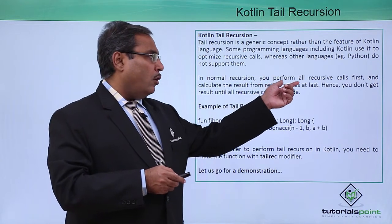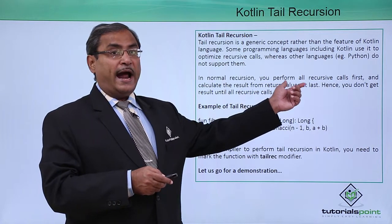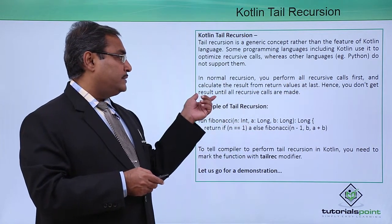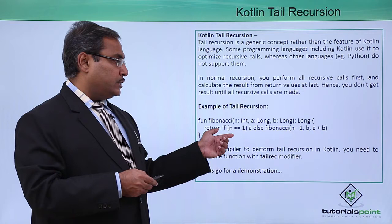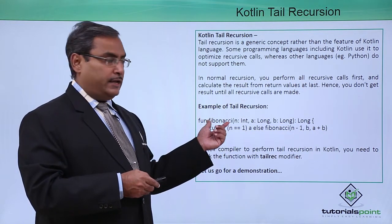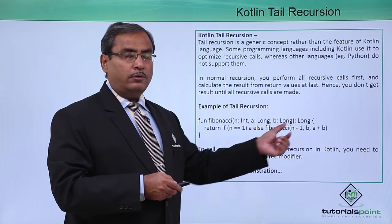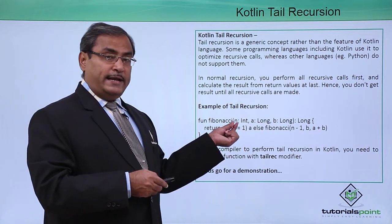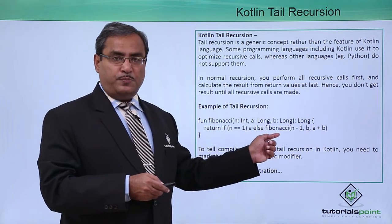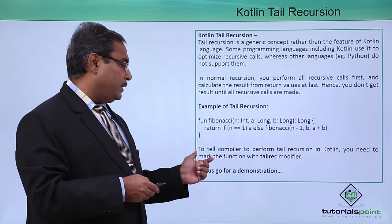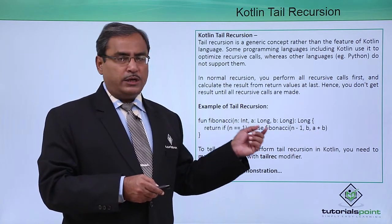In normal recursion, you perform all recursive calls first and calculate the result from the return value at the last. Hence, you do not get a result until all recursive calls are made. Here we have one tail recursion example — a function Fibonacci with parameter n of type integer, a of type long, b of type long, and it returns long. It gives the nth Fibonacci number using an if expression, and the corresponding value will be returned.